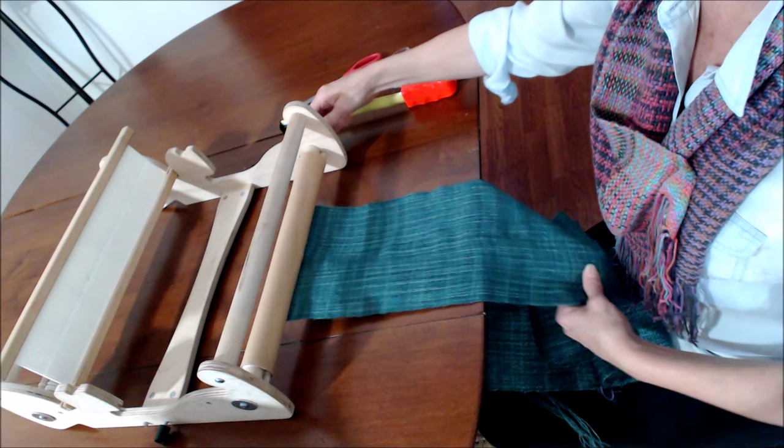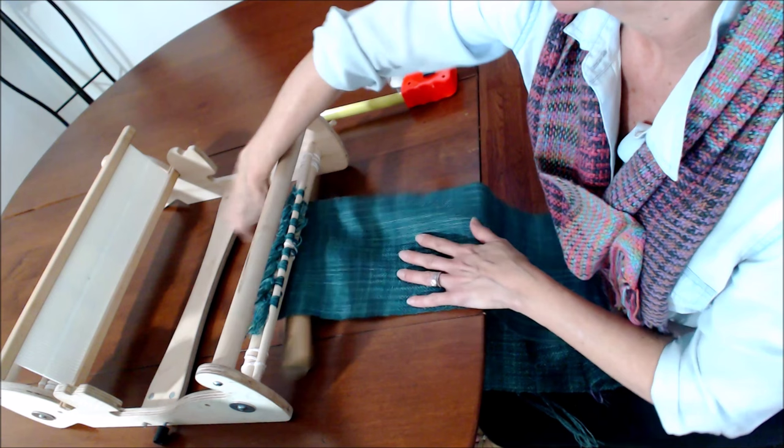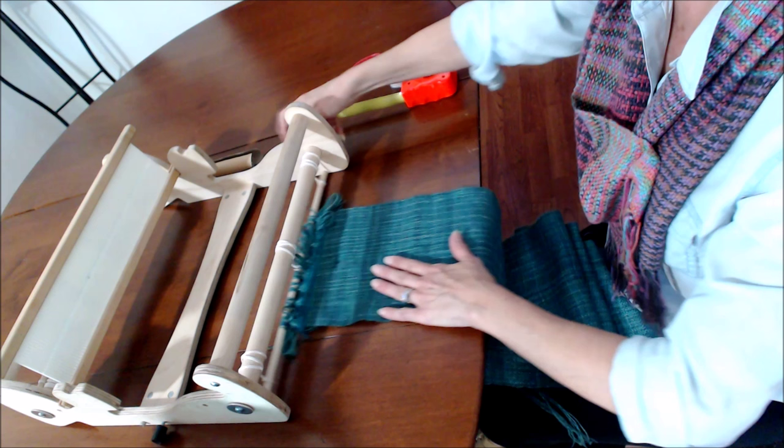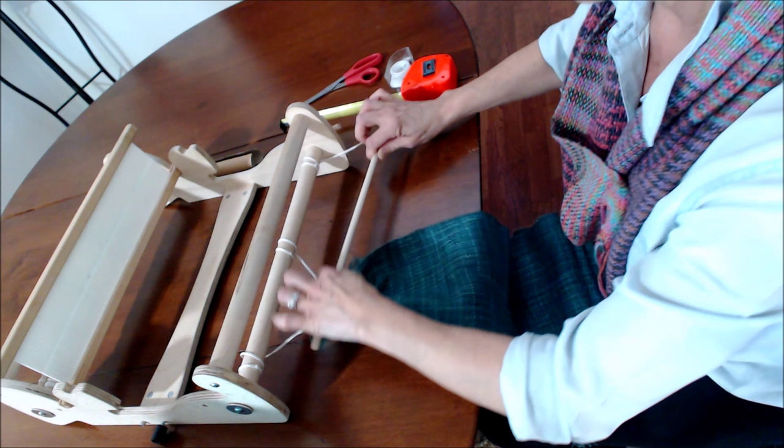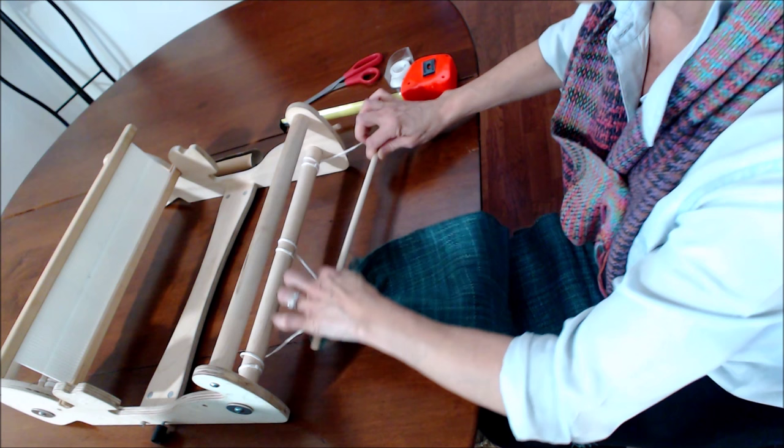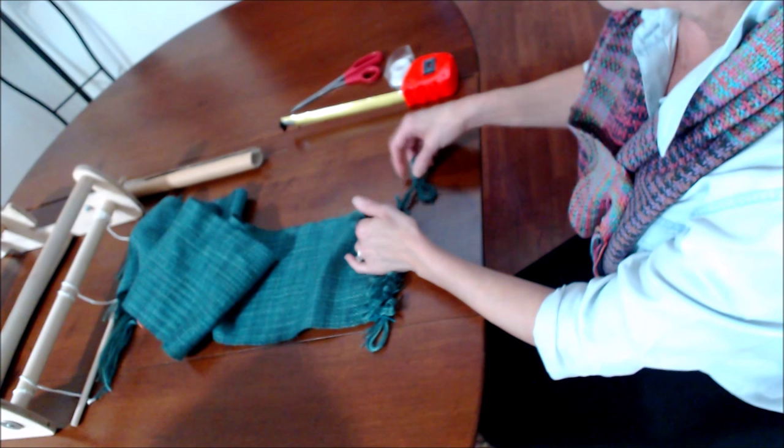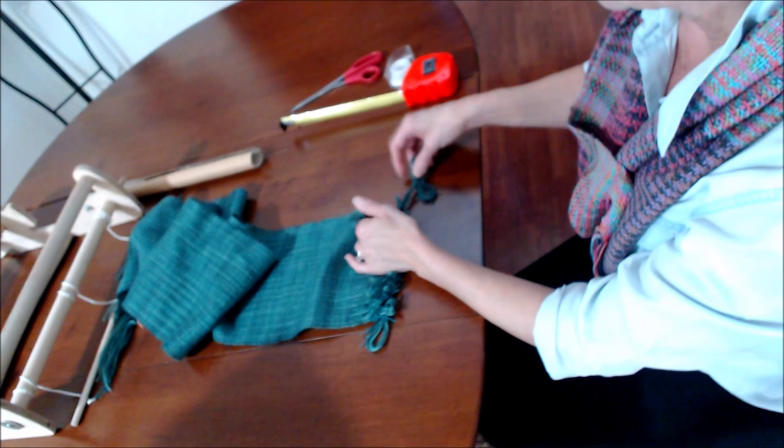I actually have two pieces on this warp. They're both 35 and a half inches long. When I get all the way down to the knots, I just skim them right off the front rod, apron strings and all. I can replace those later. What I want to do now is focus on the beginning edge. And the first thing you'll do, of course, is pick out the original bows and knots that you placed.